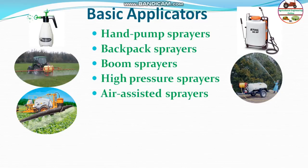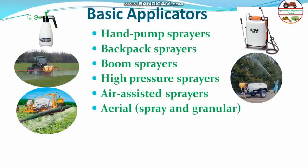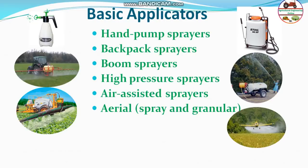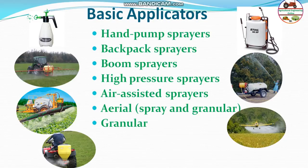The air-assisted sprayer has a long axial blower and a tunnel where air is supplied through holes along with the booms. Next is the aerial sprayer, used for spraying or granular application over very large fields from the aerial route. Next is the granular applicator, which has a small revolving fan or revolving plate that broadcasts granular pesticides, chemicals, or fertilizers.